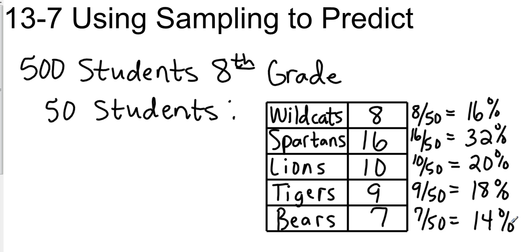So there are our percentages. Again, this is just a sample. If we had 500 students, what would be the average number of students that would pick Spartans? We would take that 500 — and Spartans is obviously going to be the clear winner, we already know that.